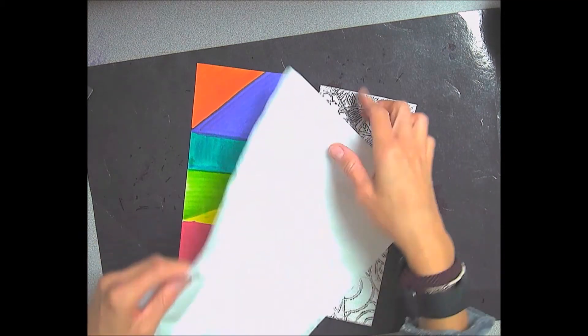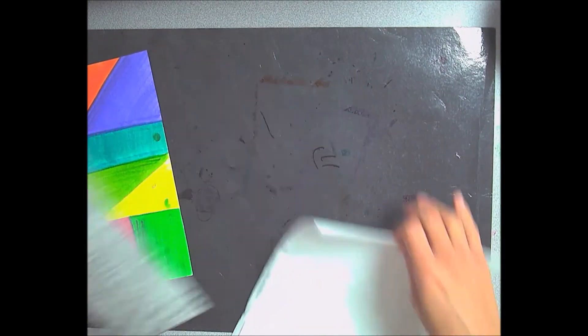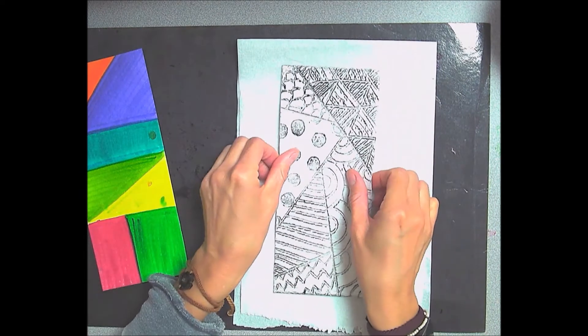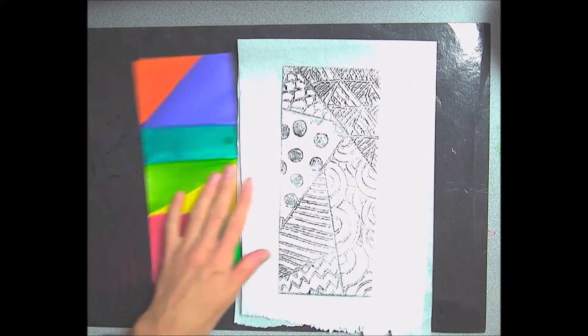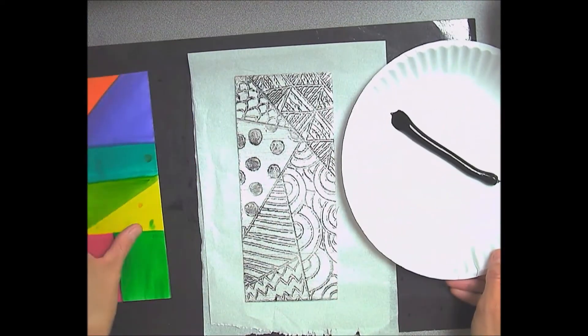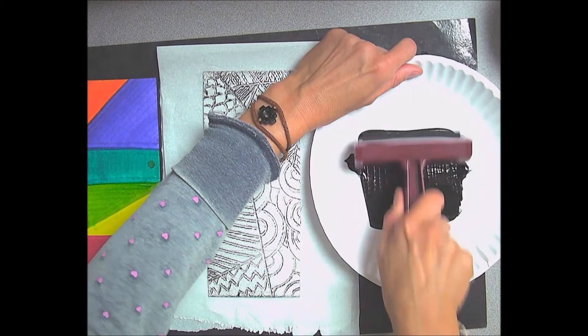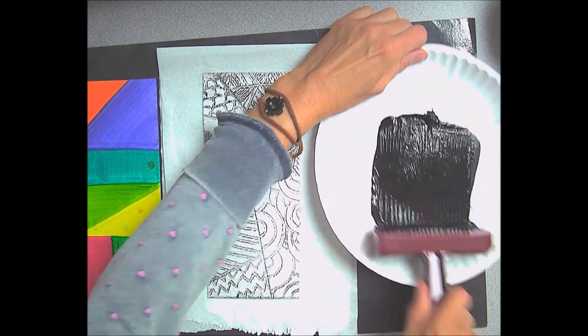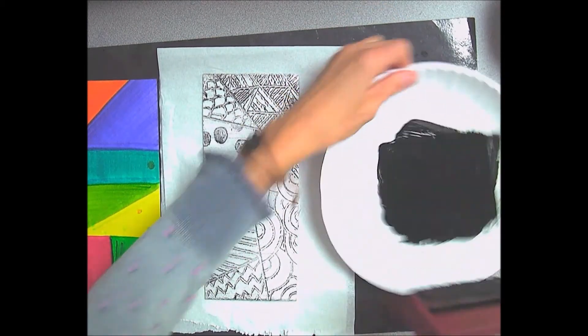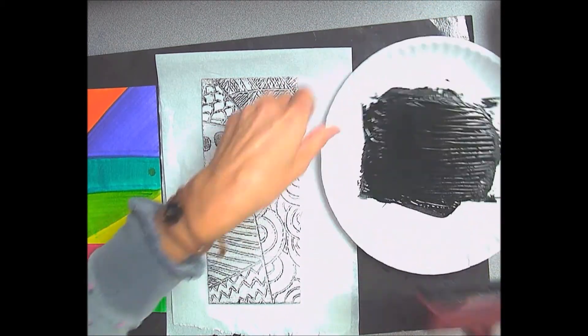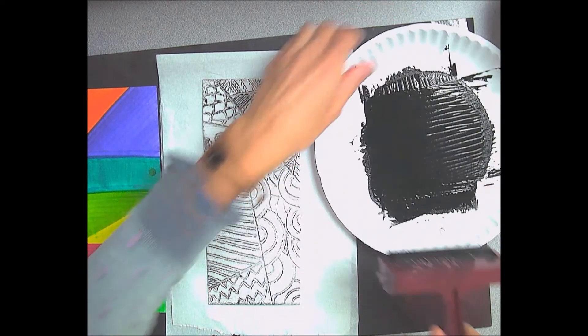You're going to take your foam piece and put it right on top of the paper towel, making sure all edges are touching the edge of the paper towel. Then you're going to get a big black line of ink on your plate and roll the brayer quickly while rotating the plate. It's going to make that sticky sound that you might remember from last year.